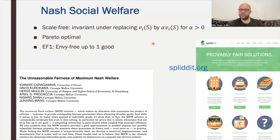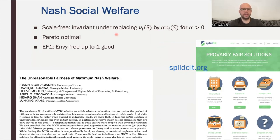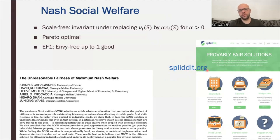Nash social welfare has some very nice properties. Unlike the other two objectives, it is scale-free: if an agent multiplies their valuation by 100, the solution doesn't change. Second, optimal Nash social welfare allocations are also Pareto optimal and envy-free up to one good, making them a very fair way of allocating goods — as claimed in the paper 'The Unreasonable Fairness of Maximum Nash Welfare.' Finally, the website Spliddit.org uses Nash social welfare allocations as fair division of goods to agents.